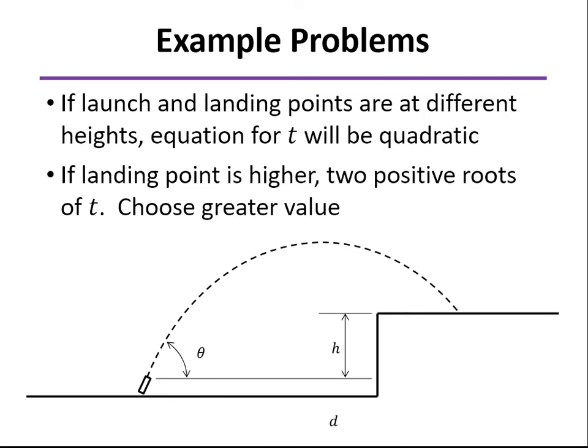Now, if it's like this, where I've shown the landing point is above the launch point, then you're going to get a quadratic equation. And that's going to have two positive roots. And your tendency, usually when you see two positive roots, is to choose the lower one.